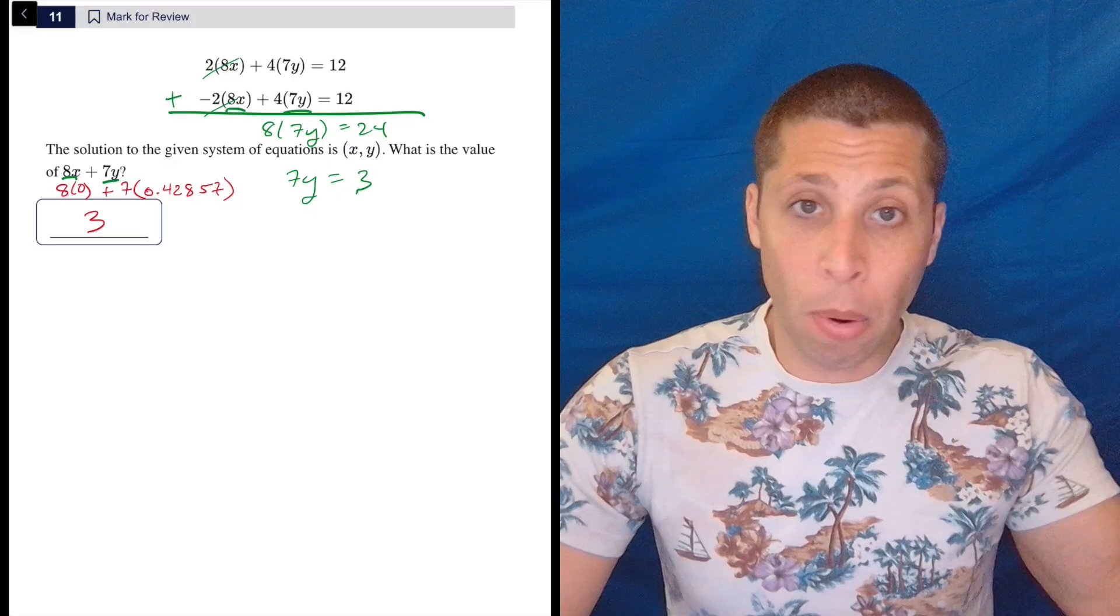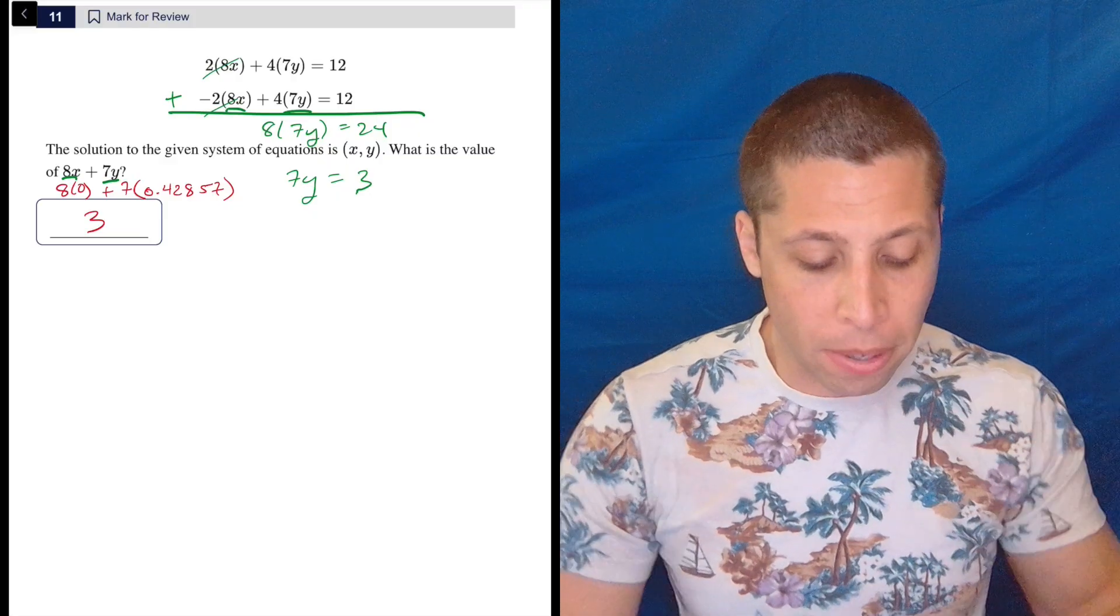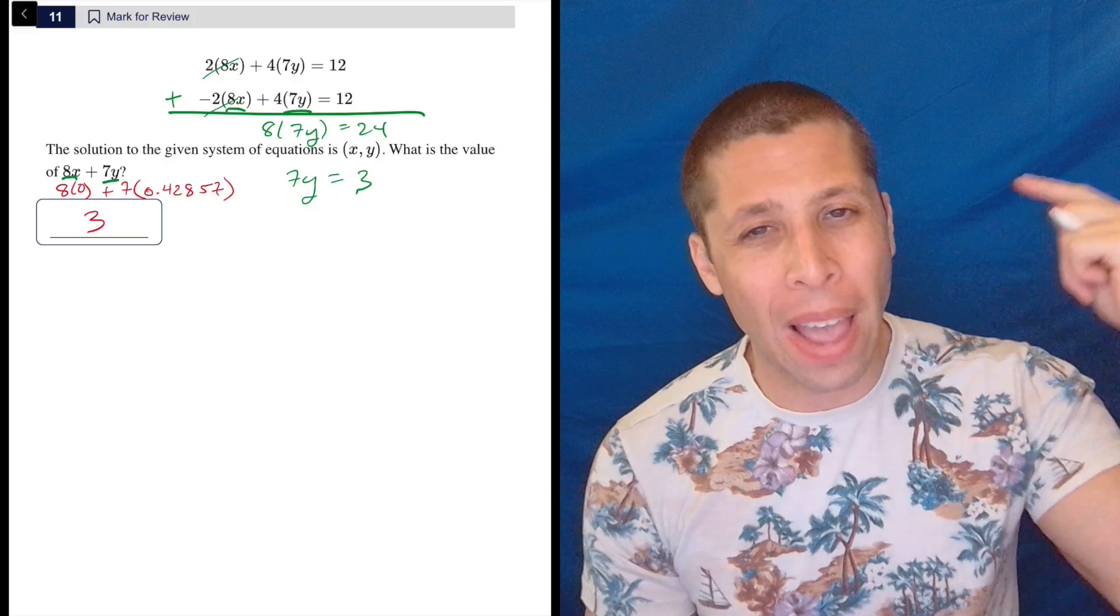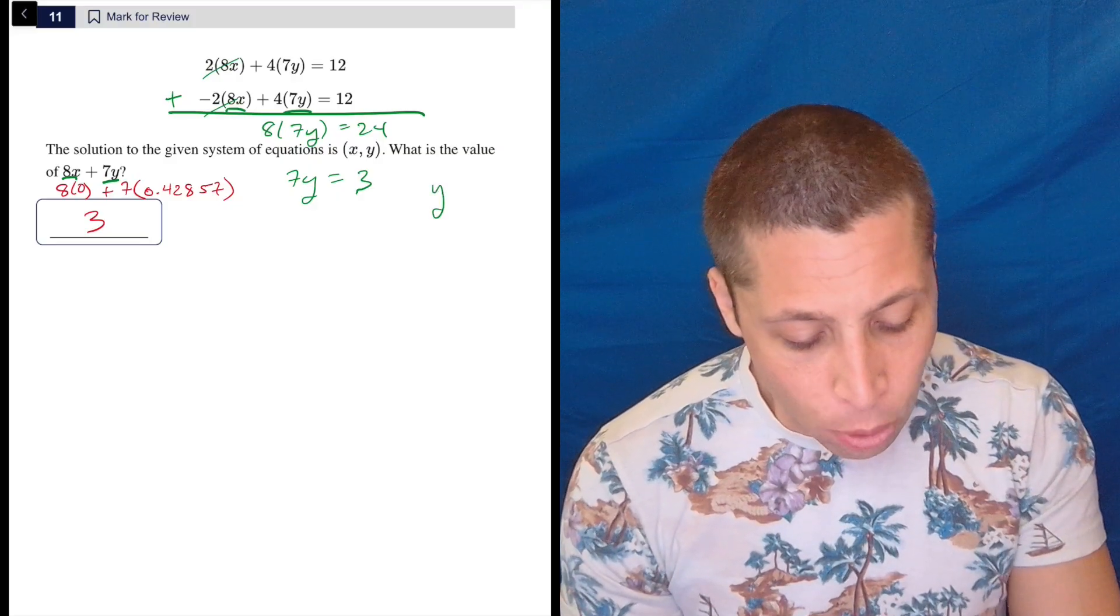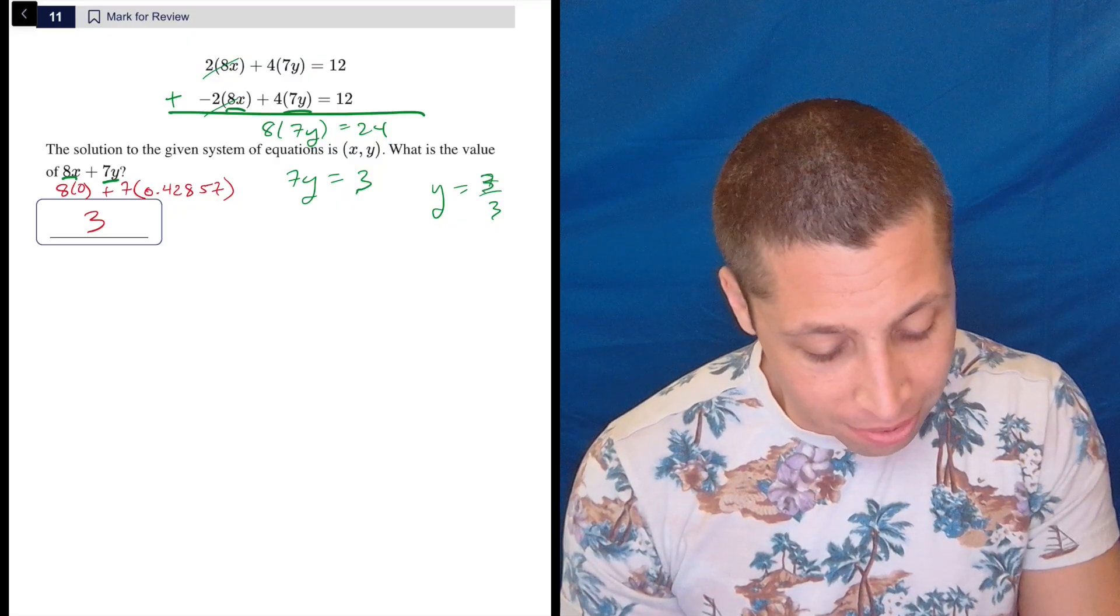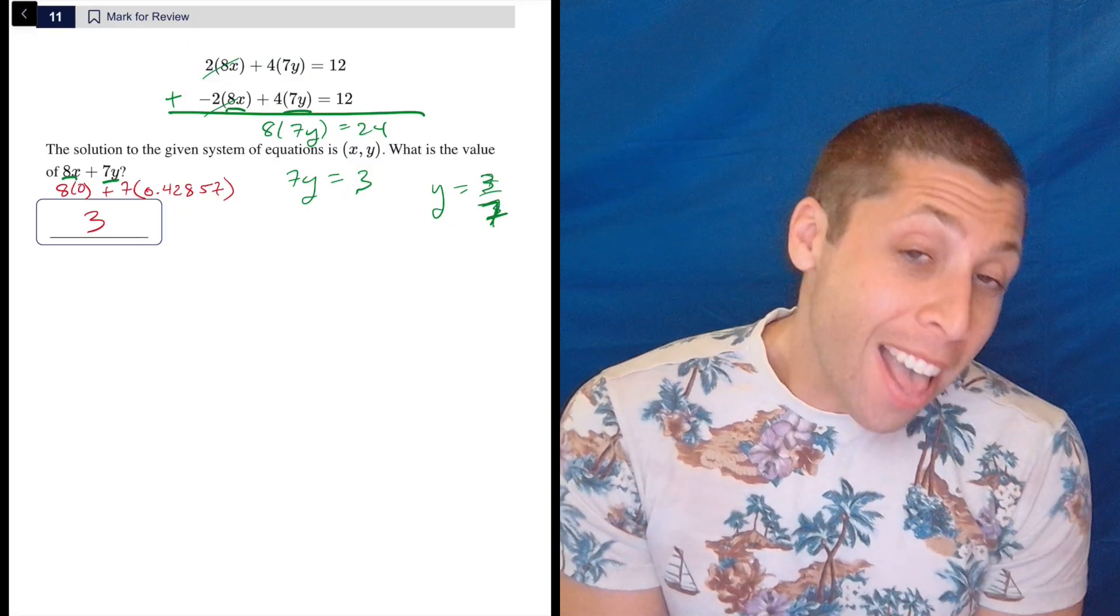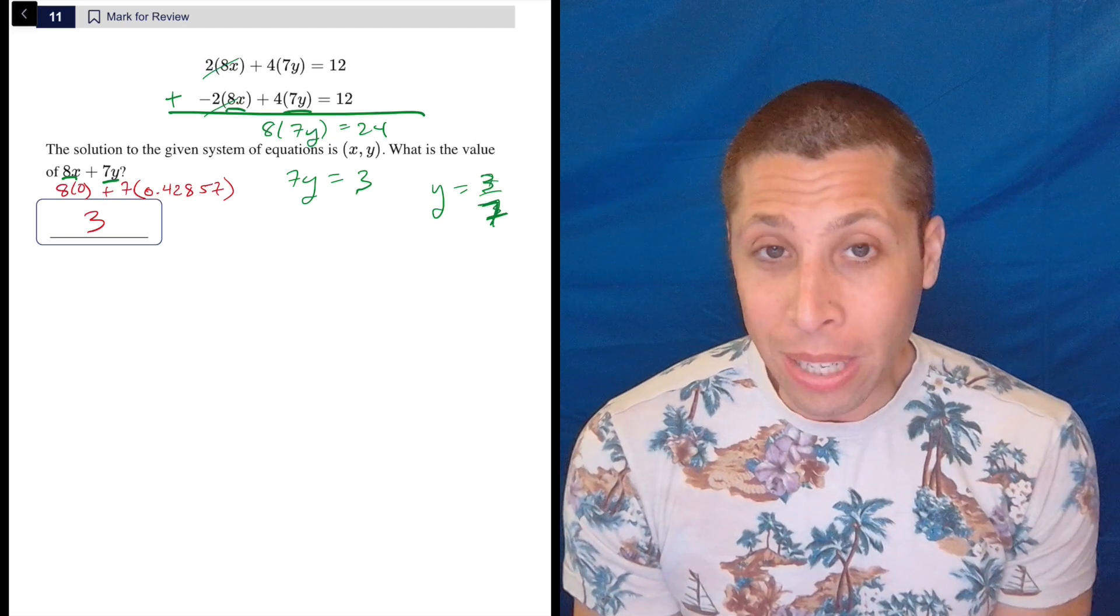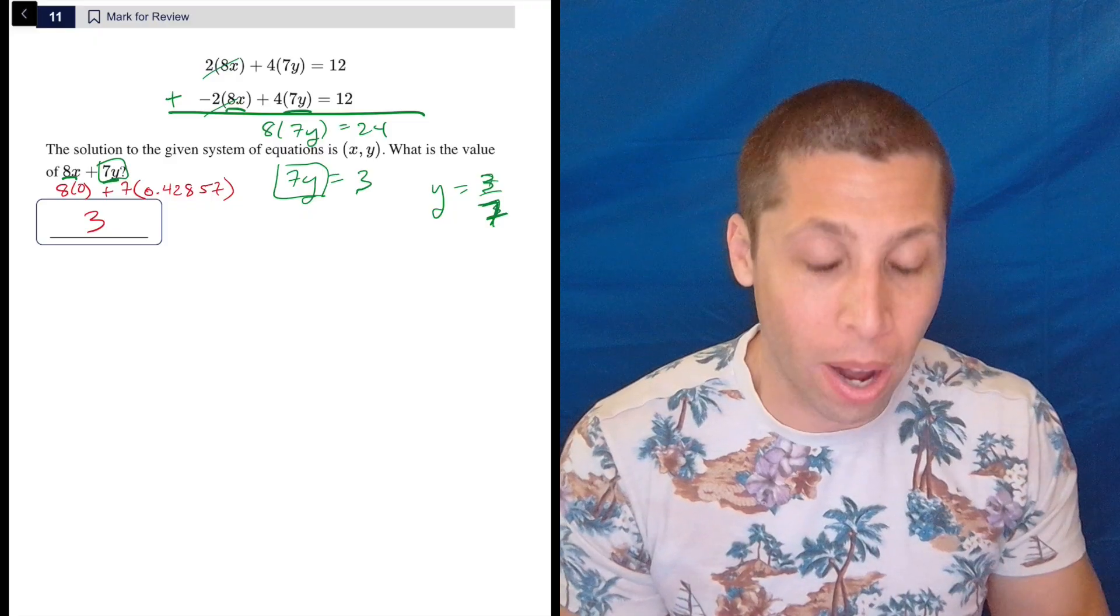Now, I know that that's the answer, but technically at this point, we wouldn't know that because we don't know what 8x is. So we wouldn't really be able to kind of come to that conclusion. And I also think that out of habit, so many of you are just going to divide by 7 and get that y is equal to 3 sevenths. Wow. See, this is why I don't do algebra. 3 sevenths. And then you'll just kind of end up with a fraction for no good reason. Because we don't need y, we need 7y. We have 7y, right? We have what we want.